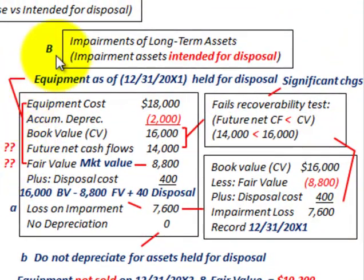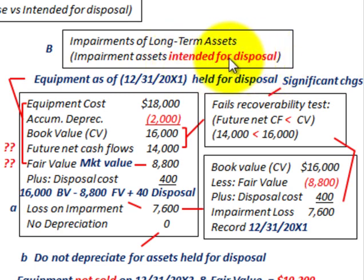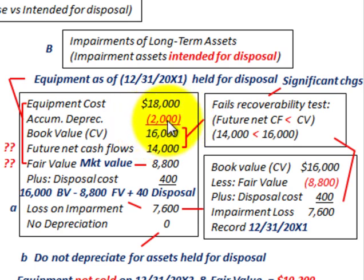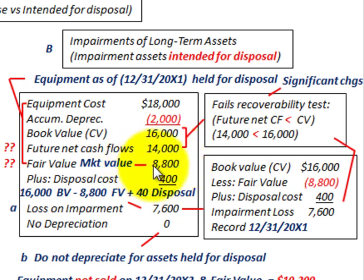Now let's look at our second case — the same example, but this time the long-term asset is intended for disposal. We plan on disposing of this piece of equipment, which is handled differently. Again, equipment cost less accumulated depreciation gives us a book value of $16,000. We still determine future net cash flows of $14,000 and fair value of $8,800.